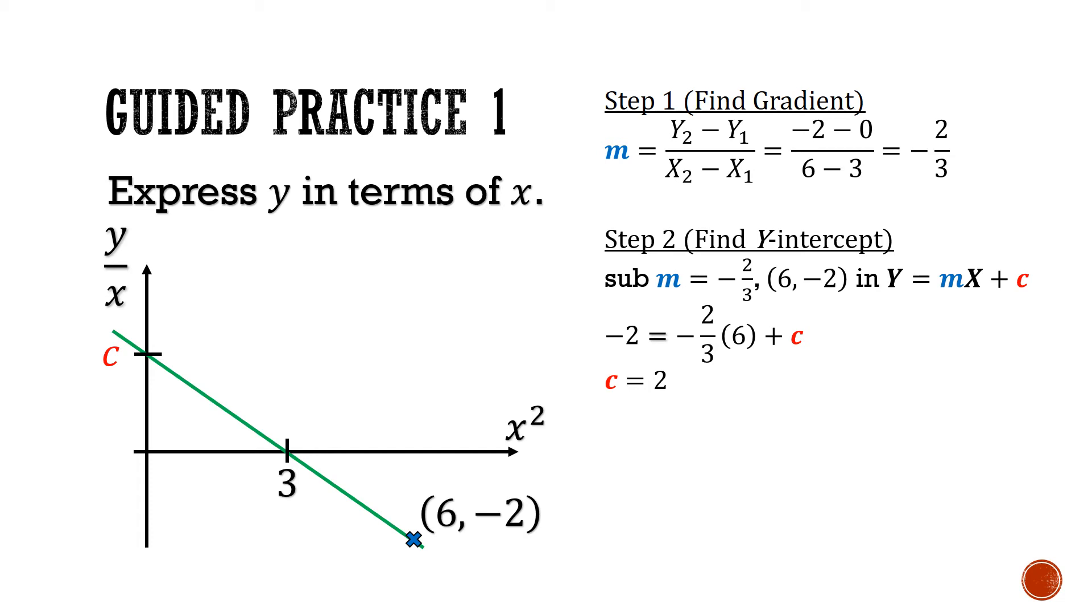In step 3, we're now going to find the equation of this straight line. So big Y is equal to the gradient negative 2 thirds, big X, plus c, which is 2.